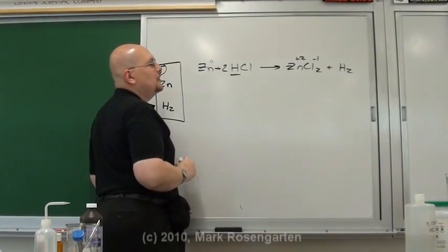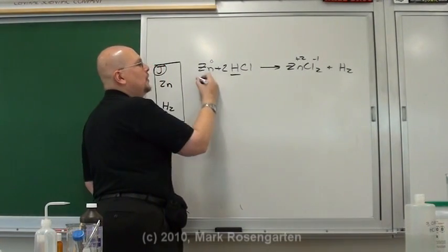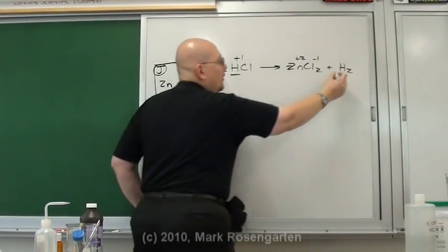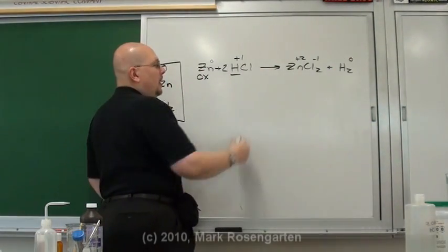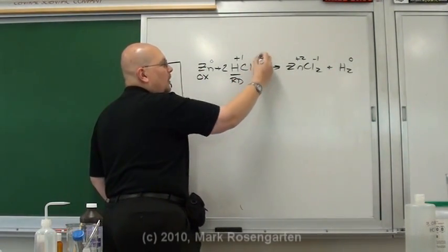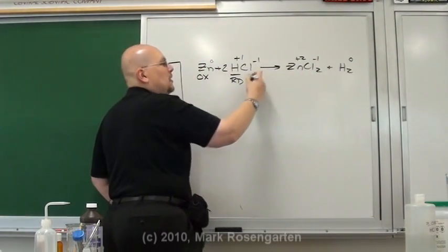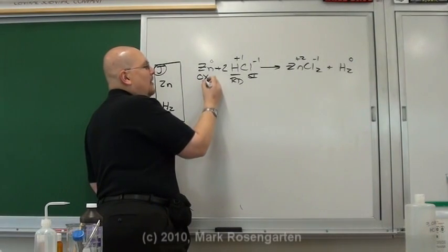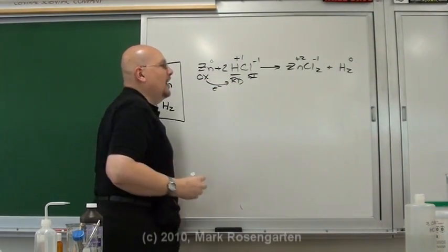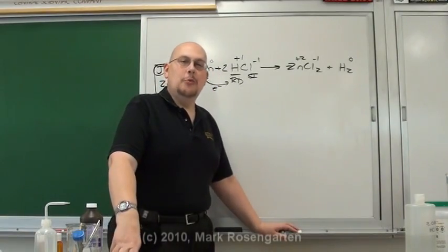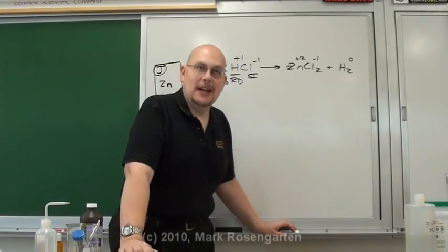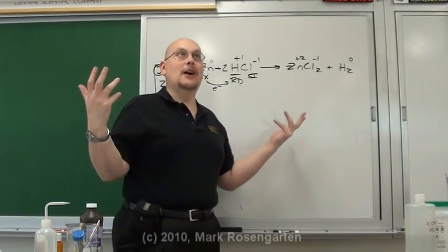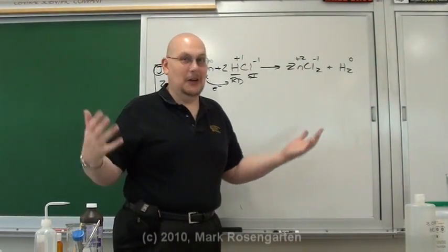Zinc starts off in zero charge, ends up as plus two. That means it underwent oxidation. The hydrogen started as plus one, ended up by itself as zero. It underwent reduction. And the chloride ion just sat on its big fat pimply butt as a spectator ion. So the zinc gave up its electrons to the hydrogen. And of course hydrogen being group one element doesn't like to exist by itself in nature. So at the first opportunity, it's going to bond to whatever it can. Since there's plenty of oxygen around for it to bond to, there you go.